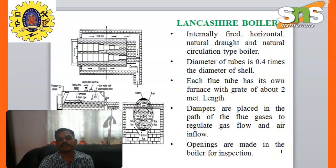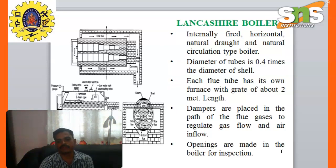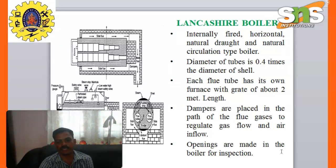Lancashire boiler is an internally fired, horizontal, natural draft and natural circulation type of boiler. The diameter of the flue tube is 0.4 times the diameter of the shell. Each flue tube has its own furnace with a grate of about 2 meter length. Dampers are placed in the path of flue gases to regulate gas flow and air inflow.